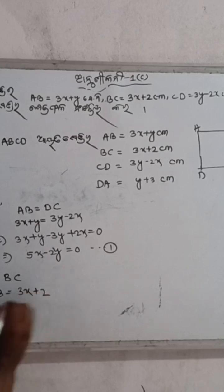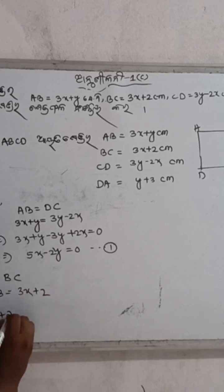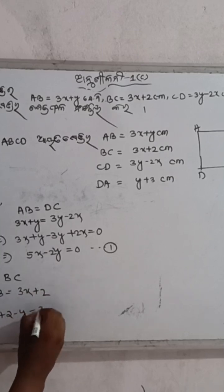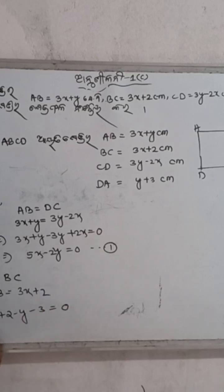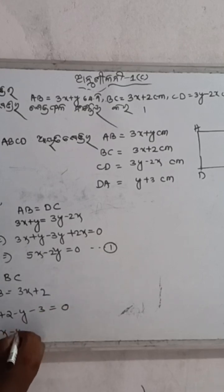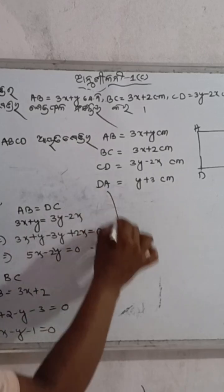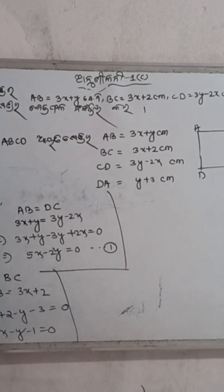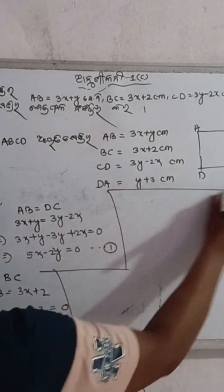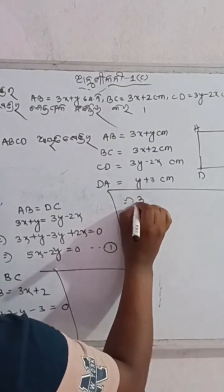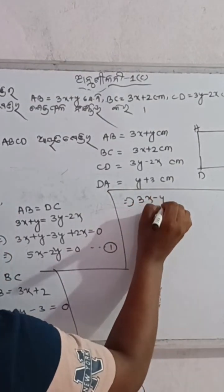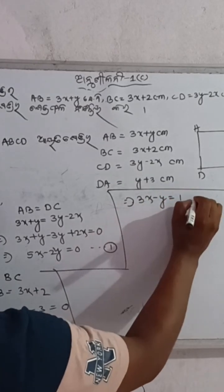3x plus 2 minus y minus 3 is equal to 0. This implies 3x minus y minus 1 is equal to 0. This implies 3x minus y is equal to 1.